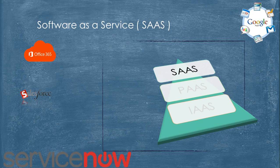To summarize, Software as a Service means that you do not have to install any application on your machine. You just need a browser and an internet connection, and you get access to the software from the cloud provider.